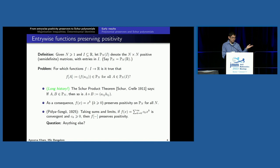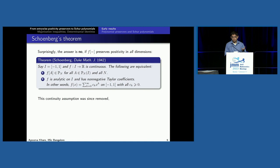It took some time to answer the question, and that was done by Schur's student Schoenberg. He said that there are no other continuous functions that work. So the following are equivalent for matrices with entries in [−1, 1]: f is a power series with non-negative coefficients if and only if it preserves positivity in all dimensions.